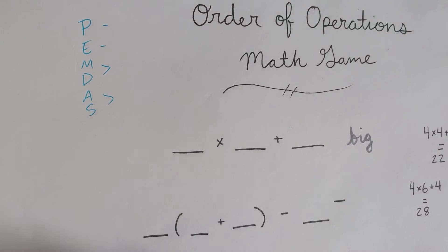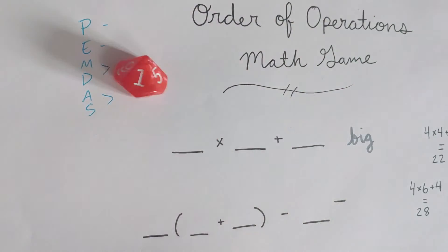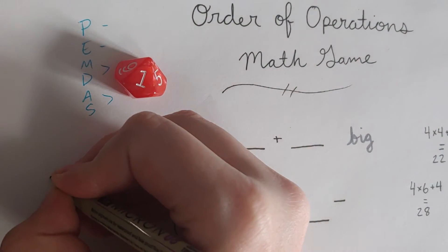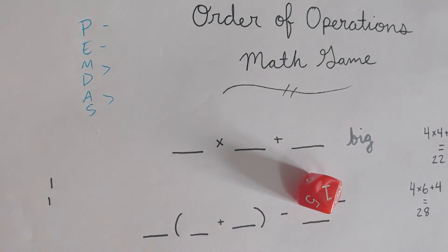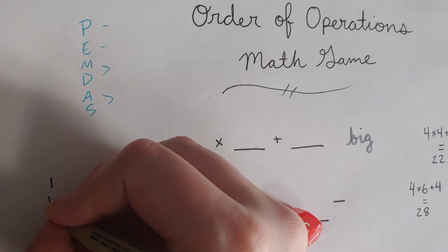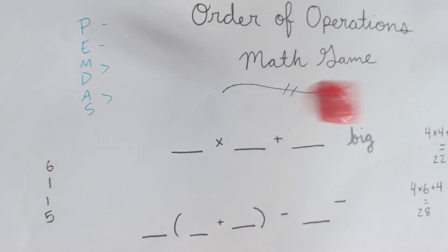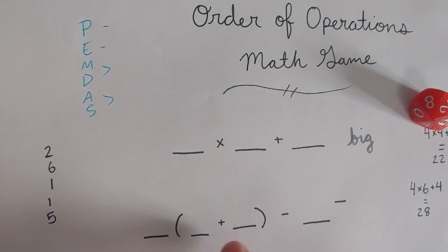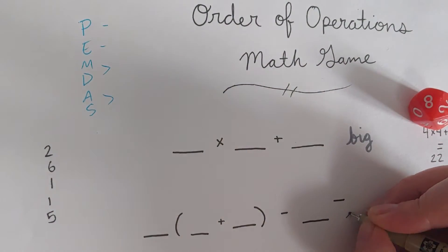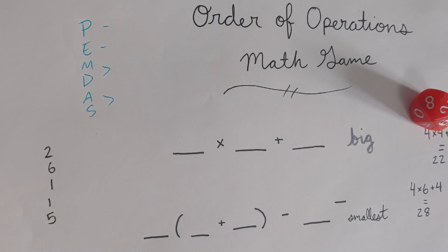Now I probably have five dice, but let's say if you only have one, we're going to roll five times to get our numbers. We got a one, another one, a five, a six, and a two. We would work using this to figure out — and I'm going to say this time I want the smallest — the smallest final answer we can find using these five numbers in these empty spaces.